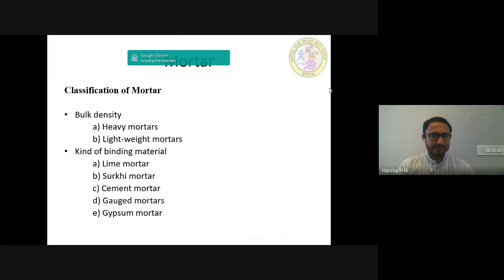Classification of mortar. Mortars are classified based on the following factors. First one, bulk density. According to the bulk density, mortars are classified as heavy mortars and lightweight mortars. The mortars whose bulk density is greater than or equal to 15 kilonewton per meter cube are known as heavy mortars and they are prepared from heavy quads or other sands. The mortar whose bulk density is less than 15 kilonewton per meter cube are known as lightweight mortar and they are prepared from light porous sands from pumice and other fine aggregates.